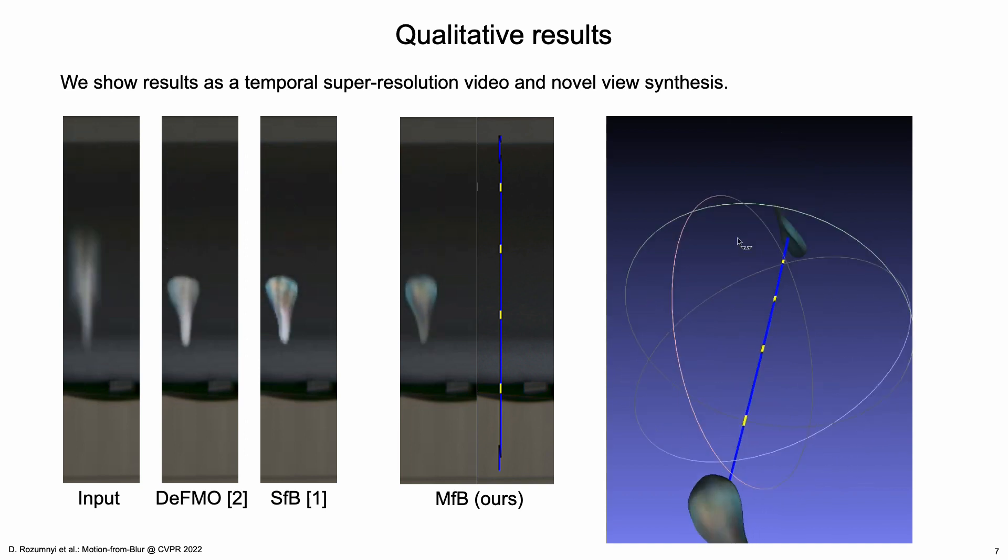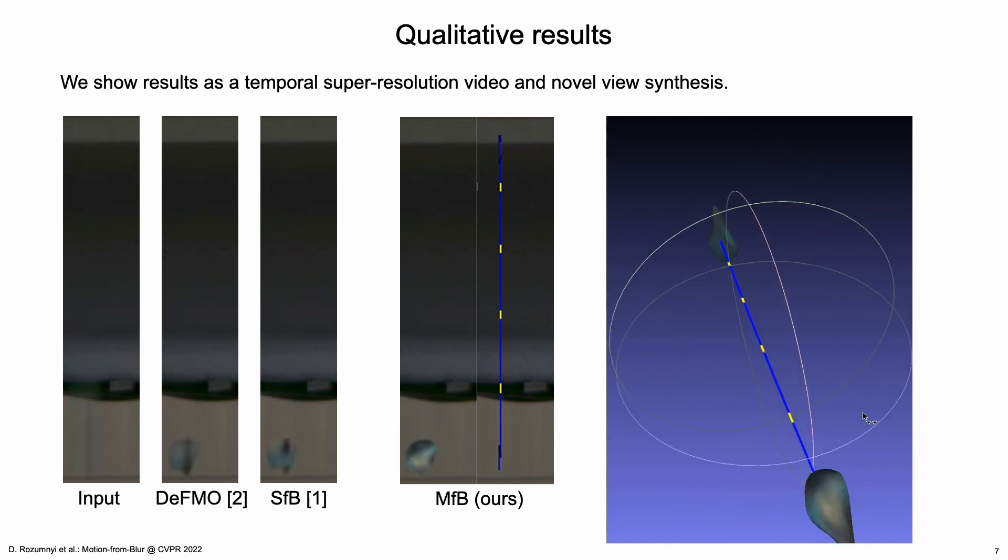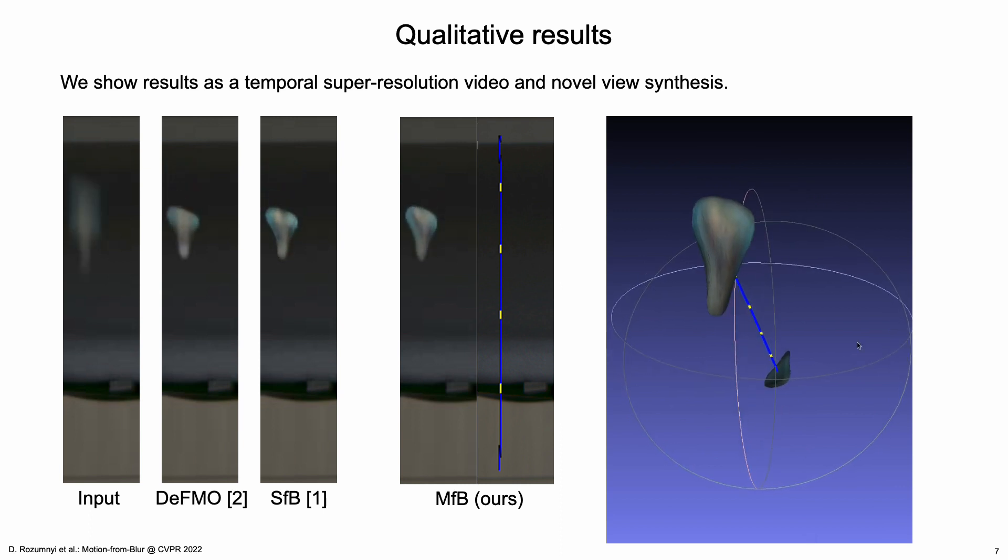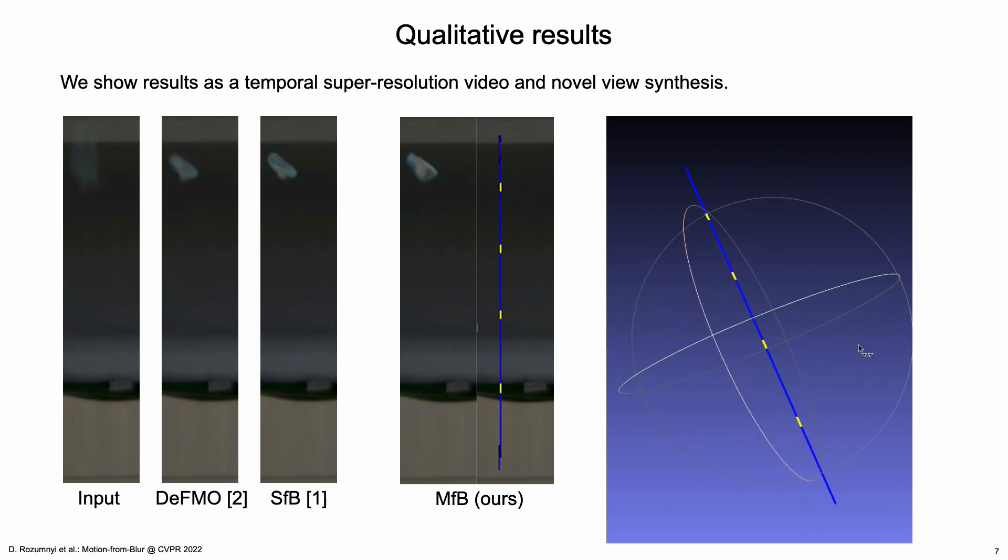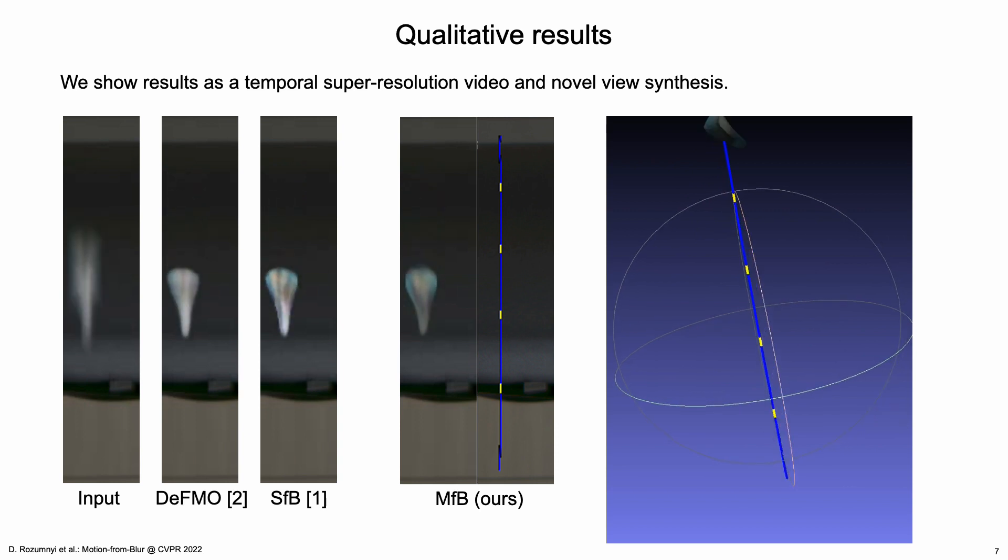We show results as a temporal super-resolution video and a novel view synthesis. Exposure gap is visualized as yellow part of the trajectory.